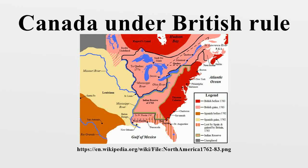The territories, colonies and provinces that would become part of modern Canada were under control of the English, and later British, empire from the 16th century, when France also had claims in the area. The most populous areas of Canada in the St. Lawrence and Great Lakes region, as well as much of the Maritime provinces, were acquired under the Treaty of Paris of 1763 when France gave up all claims to mainland North America, and former French colonies were transferred to Britain. Canada remained a collection of separate British colonies until Confederation in 1867.